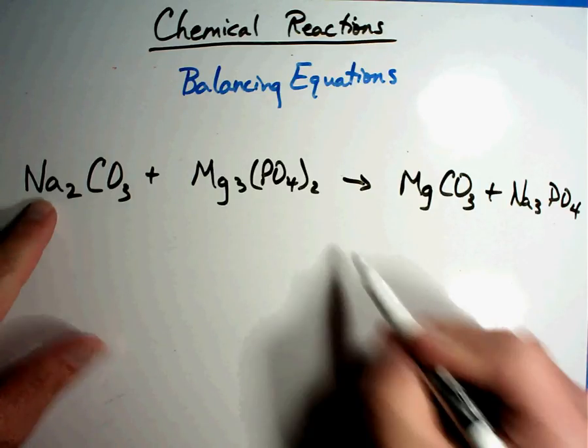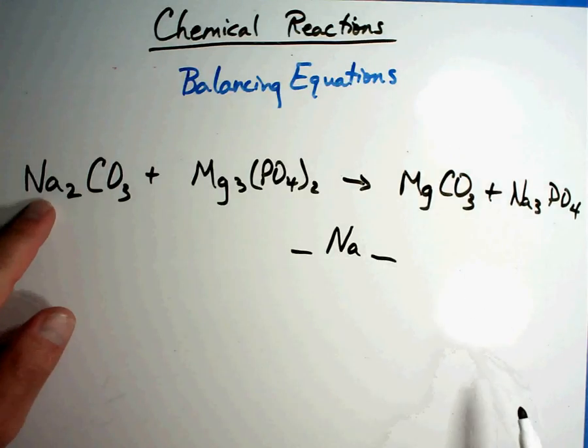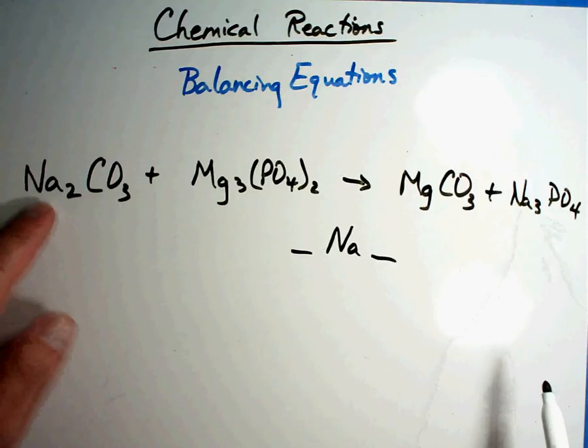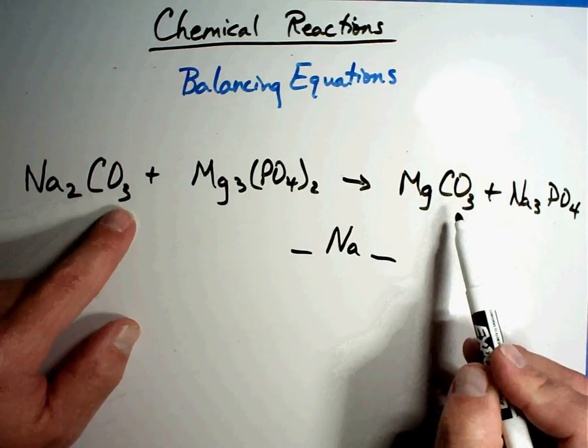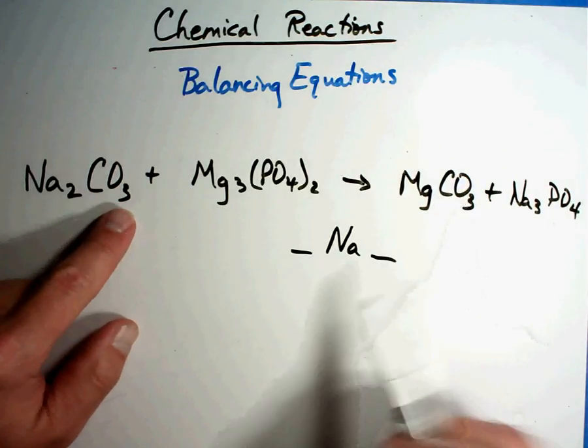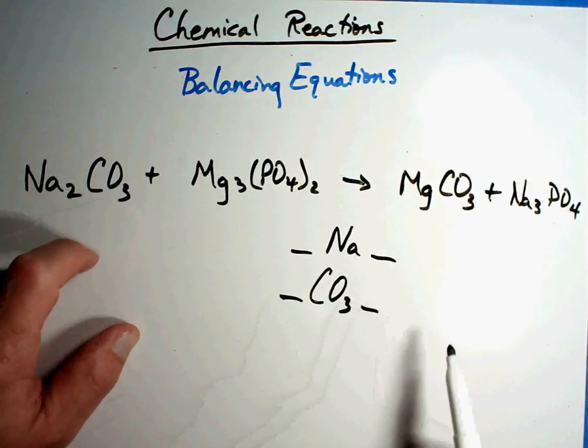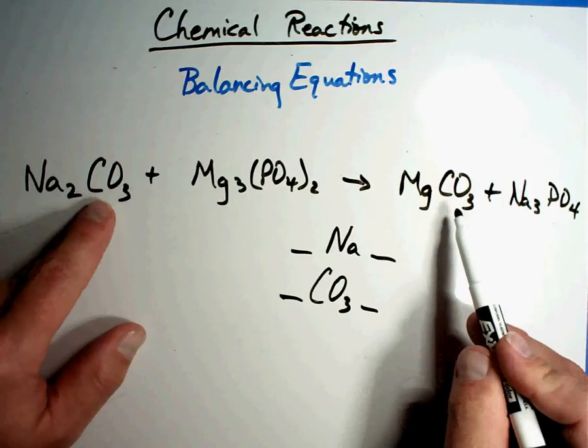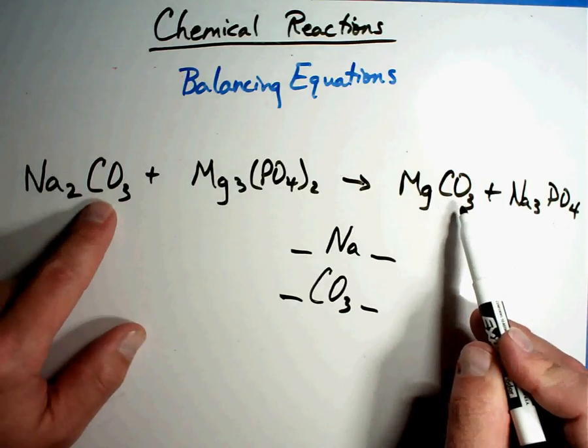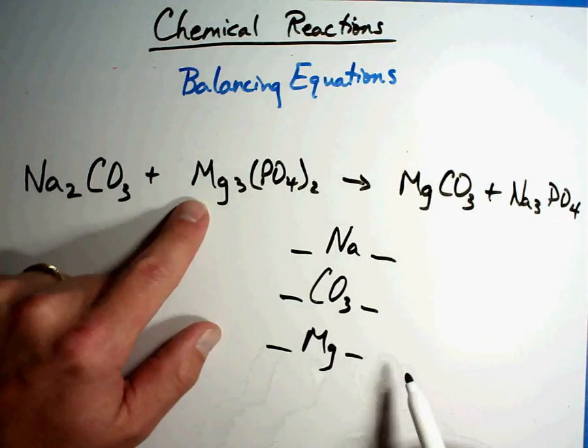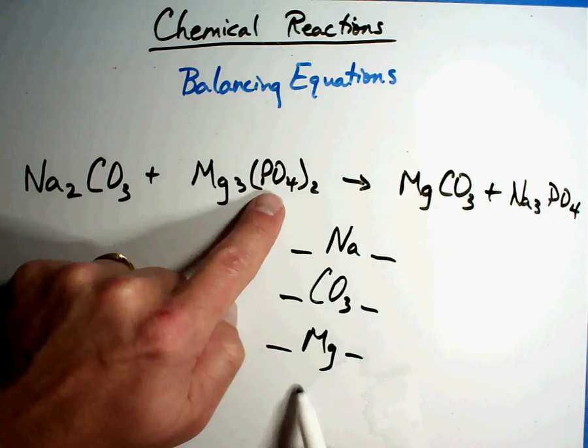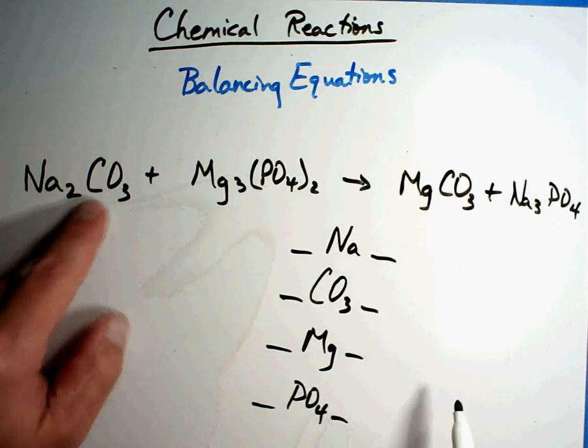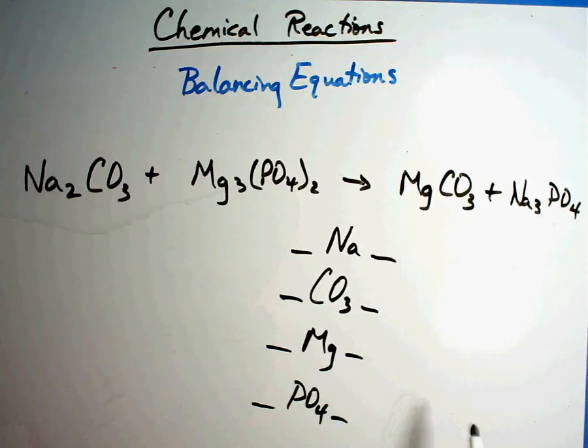What do we see on this side? I see Na, and I see Na's over there. C's and O's. But notice this, here's a shortcut. See how I have CO3 together and CO3 stayed together on that side? Let's just count those as a group, just sort of guys that hang out together. And since the formula is the same, we'll just count them as a group. I see Mg's. I see PO4 and I see PO4 also, so we'll just count those as a group.